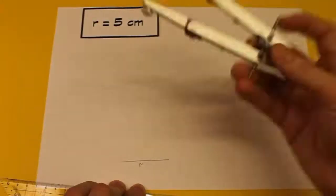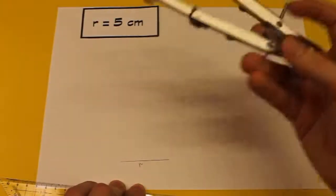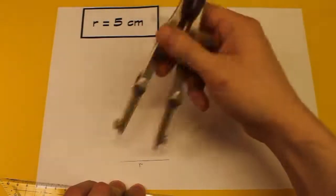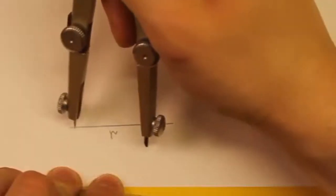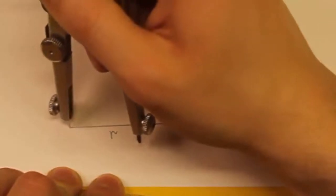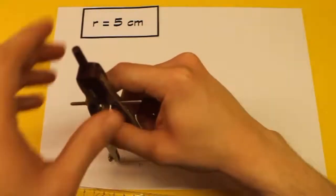Und jetzt nehmen wir den Zirkel und stechen bei einem Endpunkt dieser Strecke ein mit der Nadel und stellen den Zirkel genau so ein, dass er mit der Mine den anderen Endpunkt genau trifft.